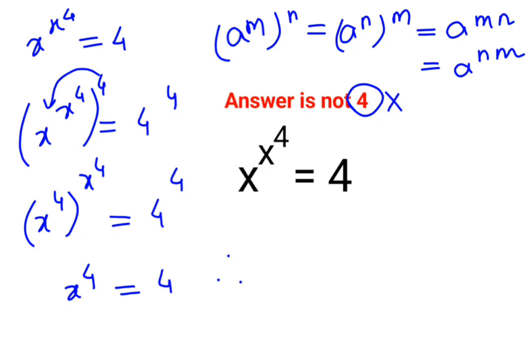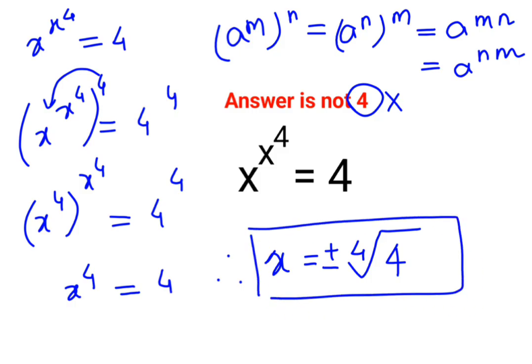Now, in order to find the value of x, we will say it is the 4th root of 4. And since it is an even power, it will be a plus-minus situation. So here we will say the value of x is plus or minus the 4th root of 4. I hope this is very clear to everyone.